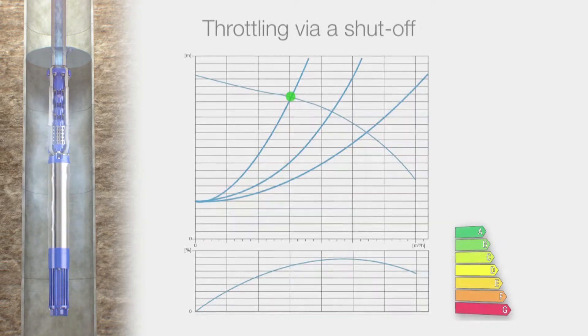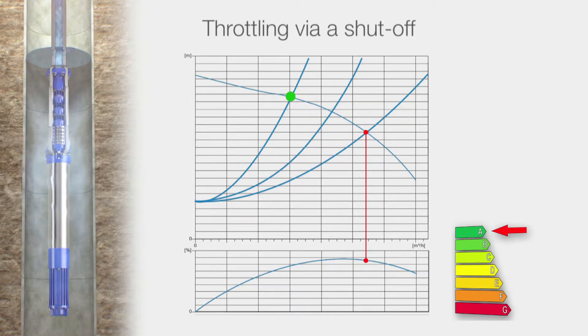Number 2 – Throttling the pump performance via a shut-off. By operating at a partial load, not only the pump and energy efficiency is minimized, but energy is also dissipated through throttling.